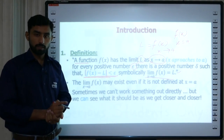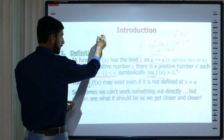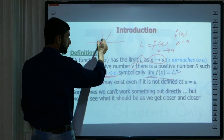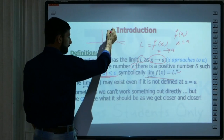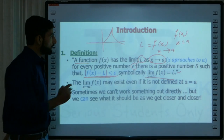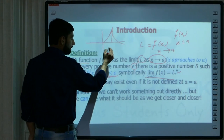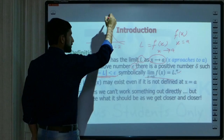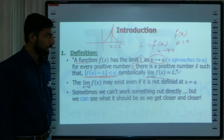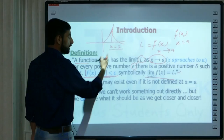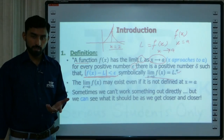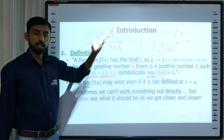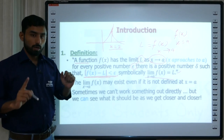Ab yeh jo function mein limits mein qareeb tareen ya approach wali baat karte hain, iski humen kya zaroorat parti hai? Iski wajah yeh hai ke aksar aap ke jo functions hote hain, due to discontinuity — unmen discontinuity is tarah ki hoti hai ke agar aap kisi x pe, for example x is equal to 2 pe, is ki value evaluate karein, to woh approximately infinity approach kar rahi hai. Toh us point pe iski value evaluate nahi kar sakte. Agar hum ne guess karna ho ya evaluate karna ho ke iski value kya hogi, us ke qareeb qareeb, to phir hum sahara lete hain limits ka.